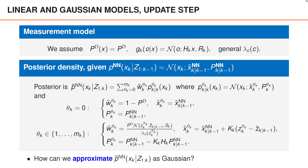The bottom line is simply that if the posterior density at time k-1 is Gaussian, the posterior at time k is a Gaussian mixture with m_k plus one terms. This is true for both the nearest neighbor and the PDA filters. The question is: how can we approximate this Gaussian mixture as a Gaussian density?